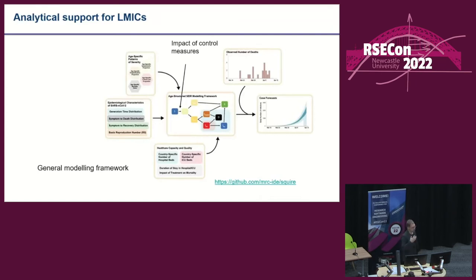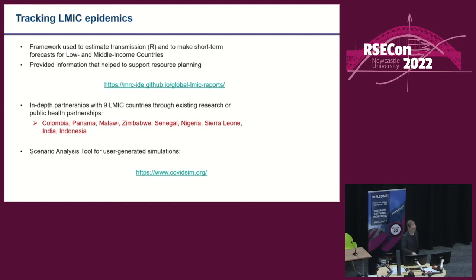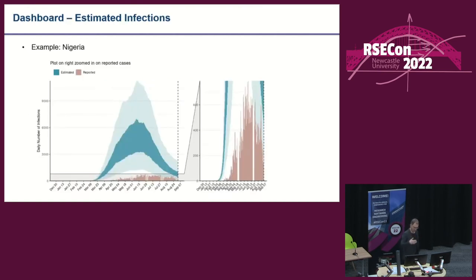In parallel, we've been doing a lot of work for low and middle income countries using the Squire framework, which is analogous to CERCOVID though a little simpler because data sources are more limited. That has been used to estimate transmission intensity every week for every country in the world, producing reports — work funded by DFID and the Wellcome Trust — together with direct bilateral support of policymakers in a number of countries. We made a user-friendly version of this modelling tool to allow policymakers around the world to look at different intervention options. The dashboard produces estimates of the true size of the epidemic based on reported deaths and assessment of underreporting.